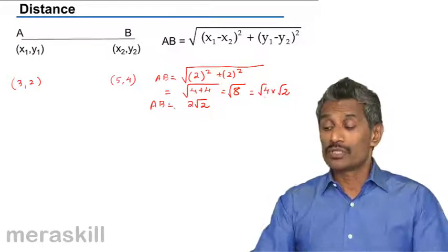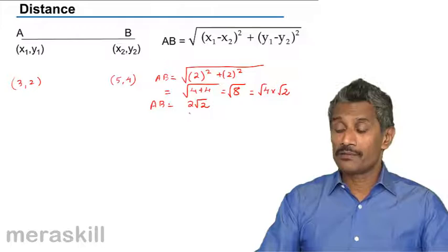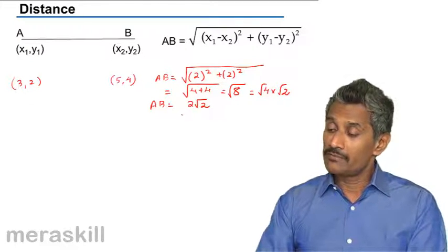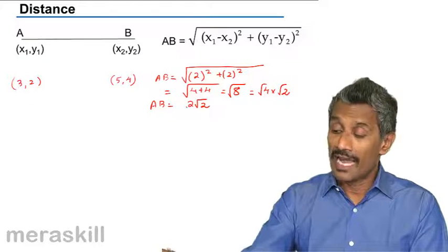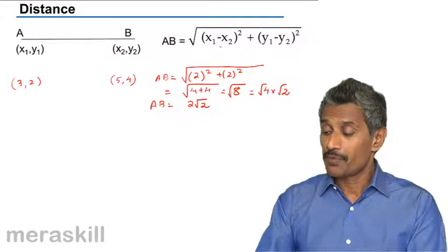This is how we can find the distance between any two points. Find out the difference in x coordinate, square it, find out difference in y coordinate, square it, add the two and find the square root and you get the distance between the two points.